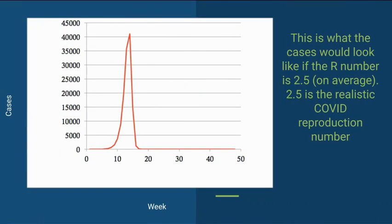With our SIR model, this is what the cases would look like if the R reproduction number was 2.5 on average. The cases would have a very sharp peak and then come back down again. But this is not what we want because we want to flatten the curve.